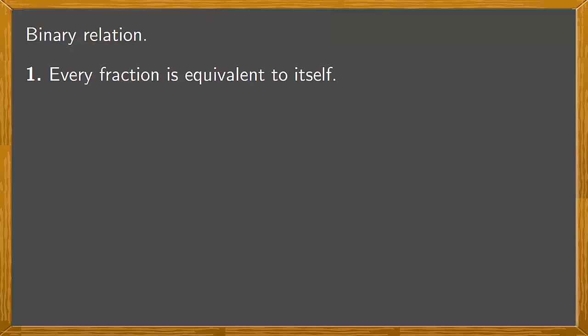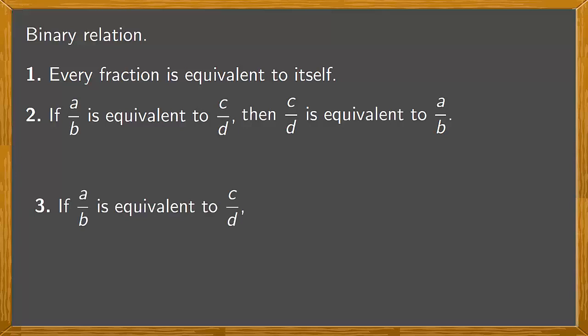First, every fraction is equivalent to itself. Second, if the fraction A over B is equivalent to the fraction C over D then we can turn this around and say that C over D is equivalent to A over B. Third, for three fractions A over B, C over D and E over F, if A over B is equivalent to C over D and C over D is equivalent to E over F then A over B is equivalent to E over F.